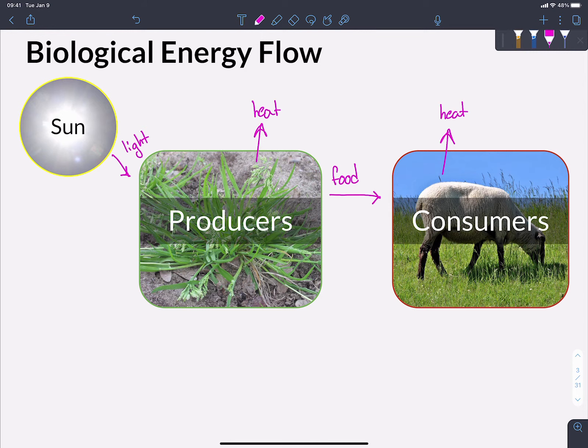Notice that there's no arrow that gets us back from consumers back to producers or anything like that in this system. That's because energy flows. In other words, it moves through. It doesn't cycle like matter does.